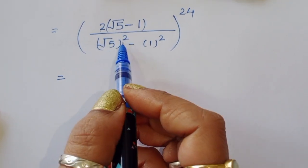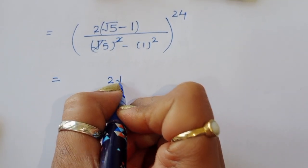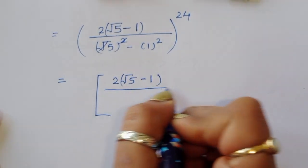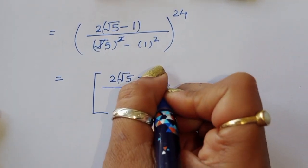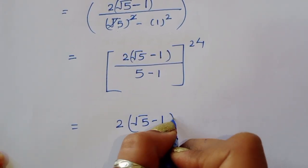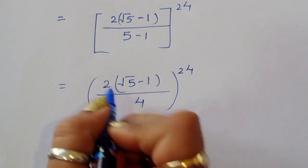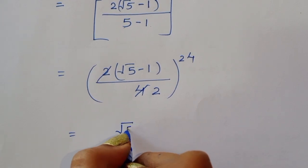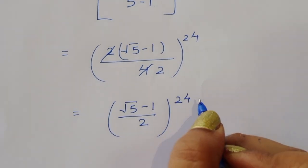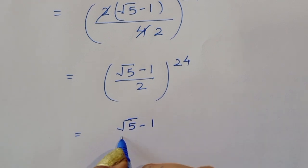So we have 2(√5 − 1) divided by 4, raised to the power 24. The 2 cancels with 4 to give 2 in the denominator, leaving us with (√5 − 1)/2, all to the power 24.